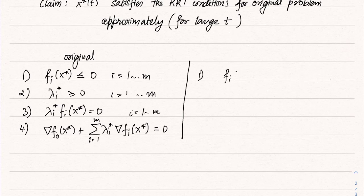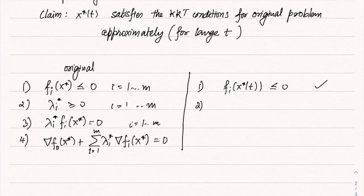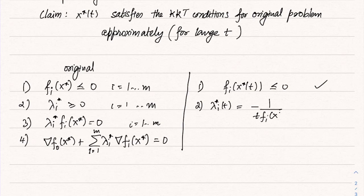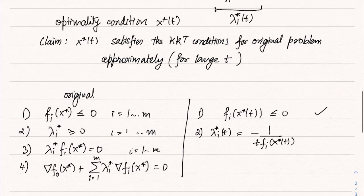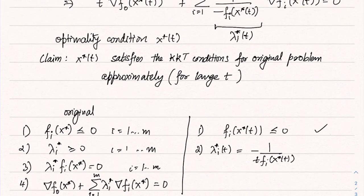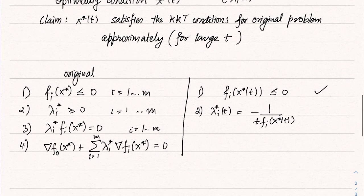Now let us check whether x*(t) satisfies these conditions. First, fᵢ(x*(t)) ≤ 0 because it is feasible — x*(t) remains feasible throughout the iterations, so the primal feasibility condition is satisfied. For the second condition, dual feasibility, we use λᵢ*(t) = −1/(t·fᵢ(x*(t))). Since fᵢ(x*(t)) is negative, this quantity is greater than or equal to 0, so the second condition is also satisfied.